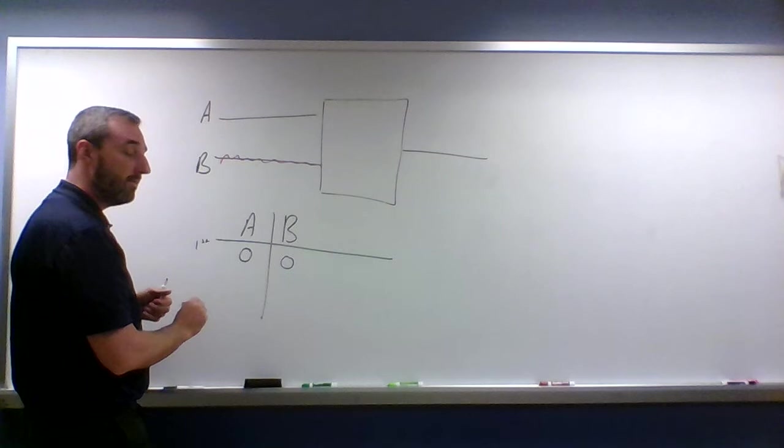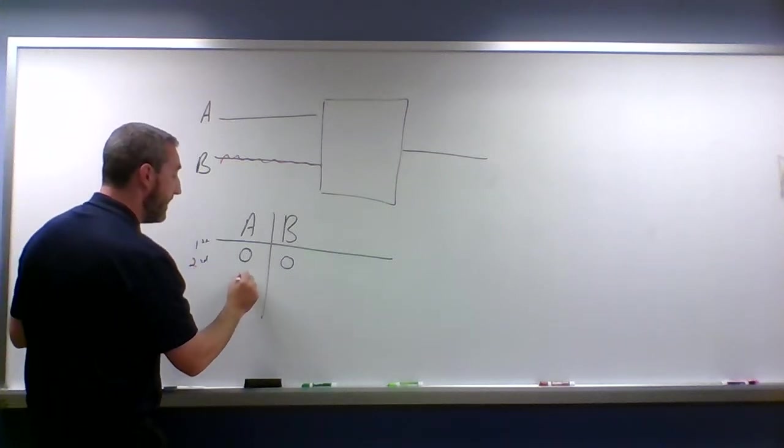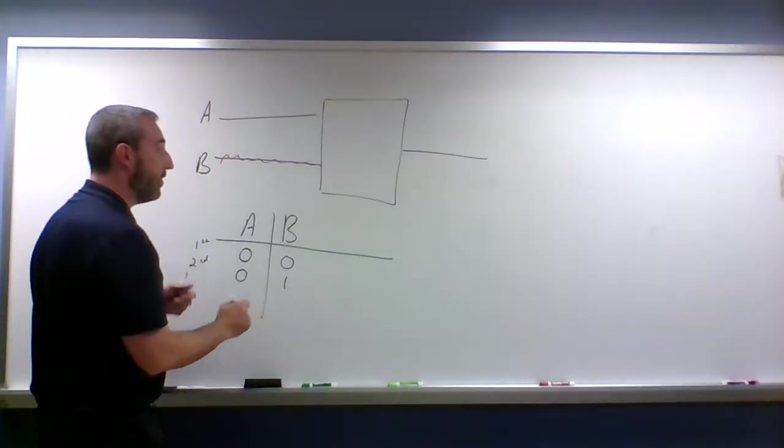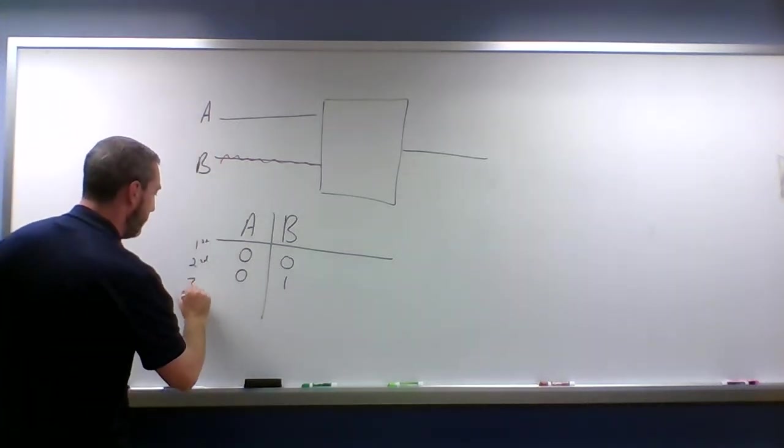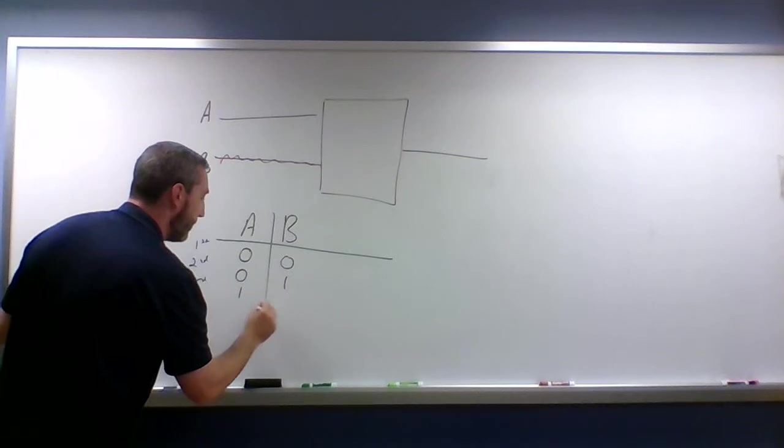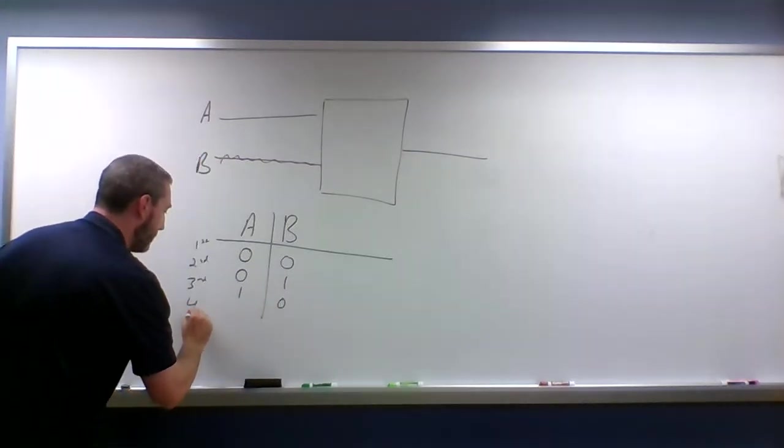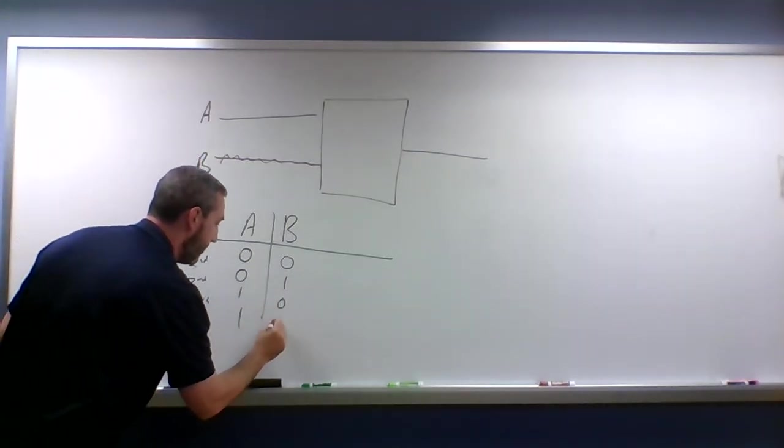The second scenario is when A is off and B is on—that's what I have drawn right now. The third scenario is A is on and B is off, and the fourth scenario is that both of them are on.